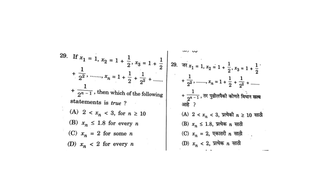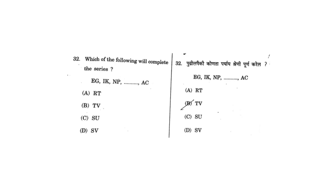Now for the 29th question, this also was mathematical and I did not solve it myself — I asked my friend. The correct answer for this question is D, that is XN is less than 2 for every N. The correct answer is D.